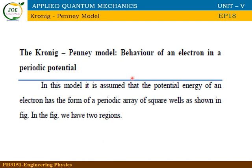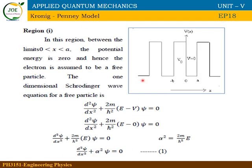The Kronig-Penney Model describes the behavior of an electron traveling through a periodic potential. The periodic potential has regions of potential energy separated by gaps. In the gap regions, the electron moves freely and the potential energy is zero. In the barrier regions, the potential energy is V₀.